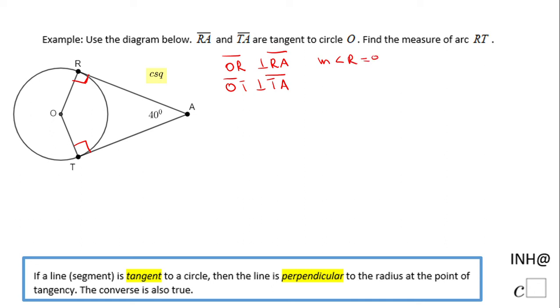Now we can look at the quadrilateral ORAT and we can write that the sum of the interior angles of this quadrilateral is 360 degrees.